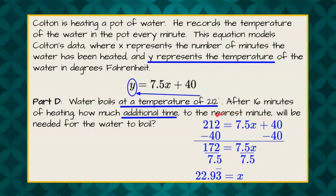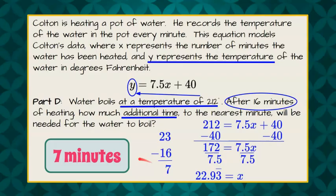They said to the nearest minute, so we're going to estimate this to be 23. We know from our previous part it's after 16 minutes. So 23 subtract 16 gives us 7. So we know that we need 7 additional minutes to heat our temperature to 212 degrees.